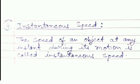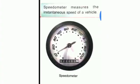Moving ahead, we will know instantaneous speed. The speed of an object at any instant during its motion is called instantaneous speed. As we know, a meter fitted on the dashboard of a vehicle is called a speedometer. It indicates the instantaneous speed of the vehicle in kilometer per hour at that instant.